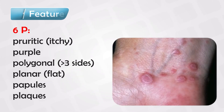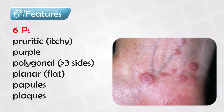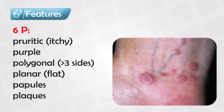Lichen Planus lesions are very distinctive — we know them by the six Ps: pruritic, purple, polygonal, planar, and papular lesions. It's basically a small area of the skin that is raised, purple in color, and very itchy.